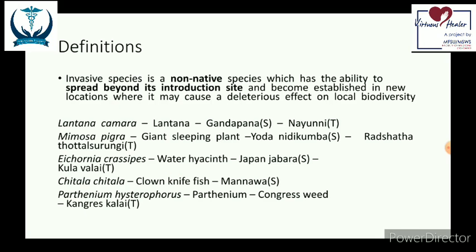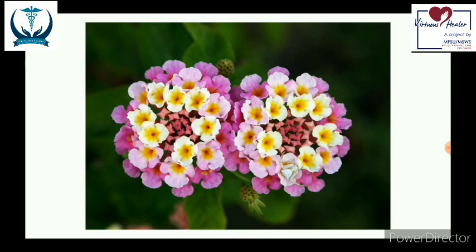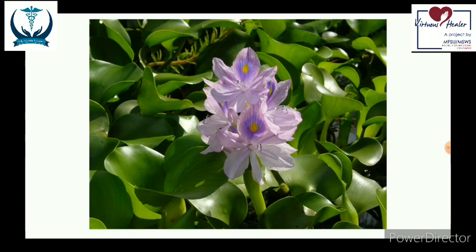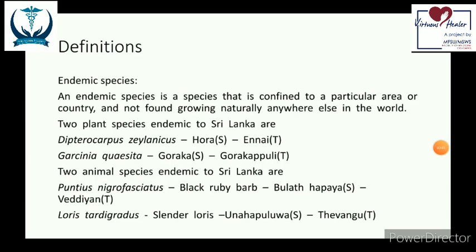From the list of invasive species, only Lantana camara is present among the options. The others belong to different categories. Therefore answer 1 (two species are invasive) is wrong. An endemic species is native but will not grow naturally anywhere else in the world — the opposite of invasive.